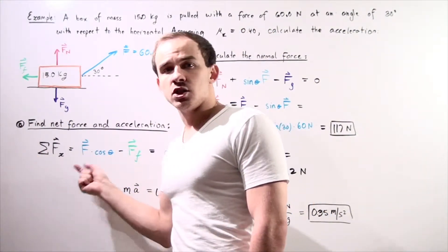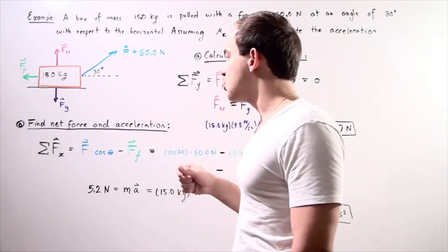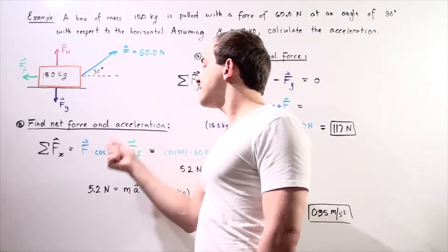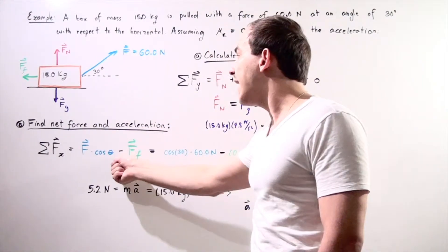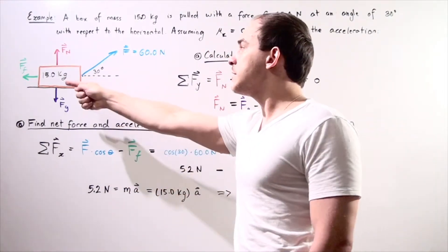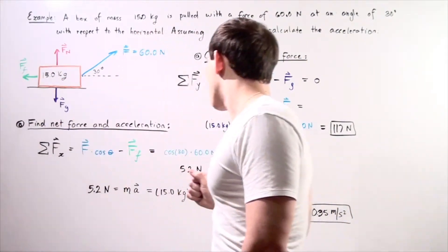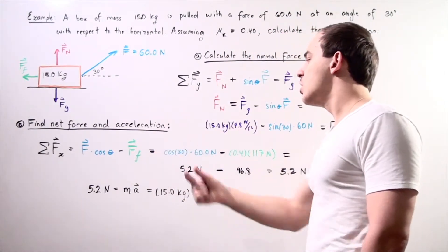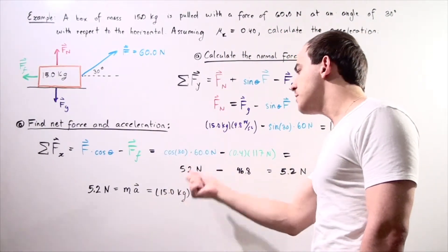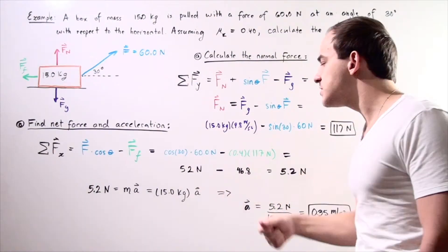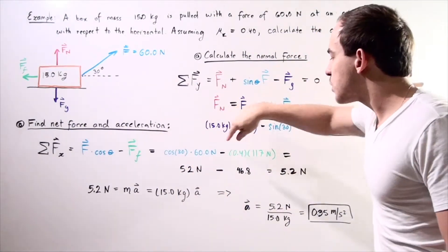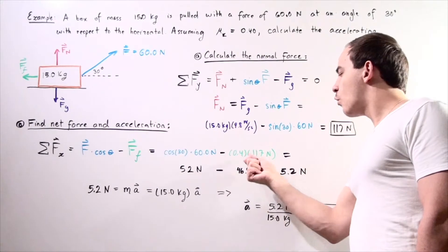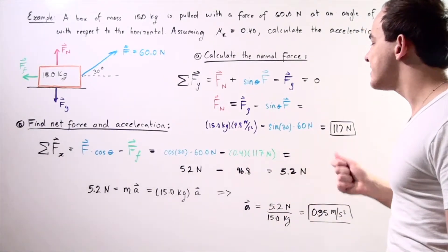The sum of all the forces along the x axis equals 60 multiplied by cosine of the angle theta minus our force of friction pulling it backwards. Cosine of the angle 30 multiplied by 60 newtons gives us about 52 newtons, and we subtract that from 0.4 multiplied by 117.